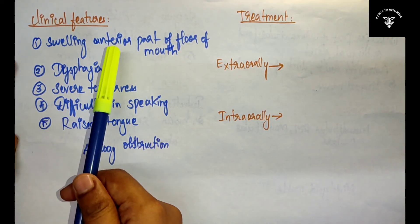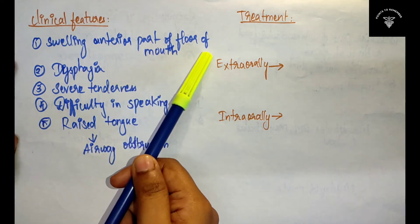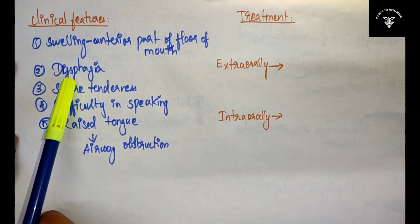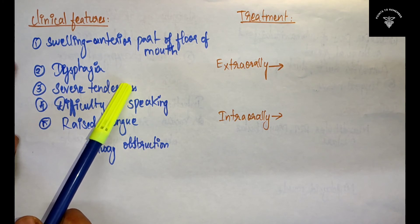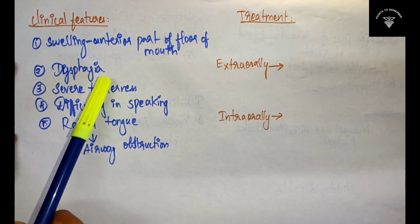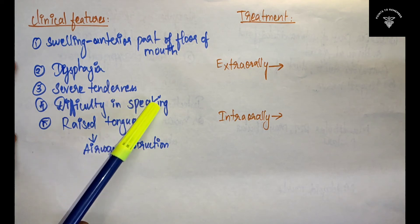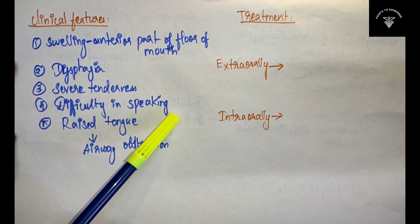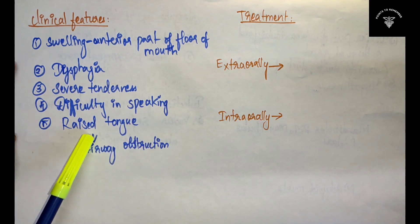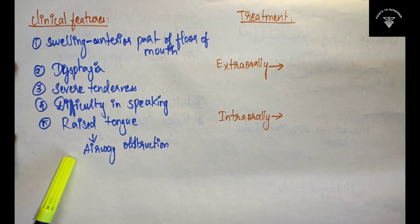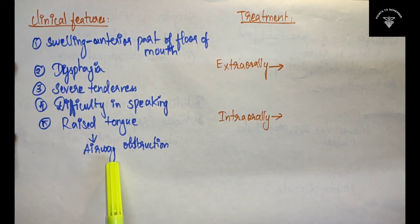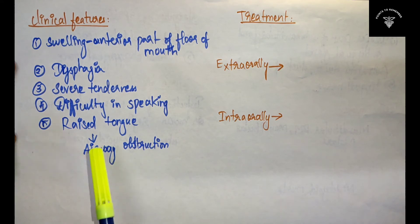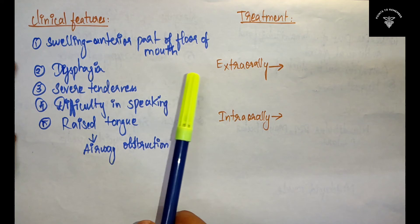To summarize the clinical features: swelling on the anterior part of the floor of the mouth, dysphagia which is difficulty in swallowing, severe tenderness, difficulty in speaking, raised tongue, and this may lead to airway obstruction. These are the important clinical features you have to write.